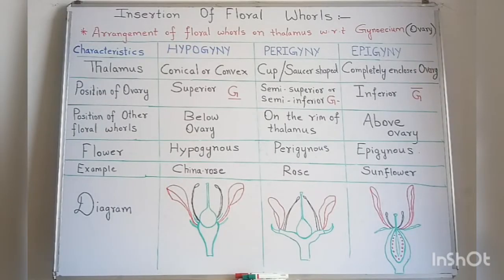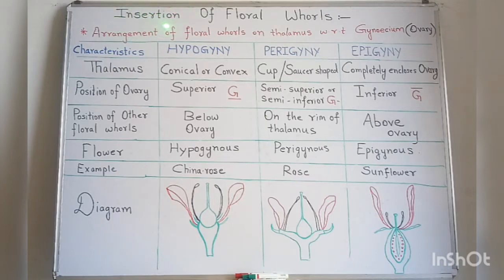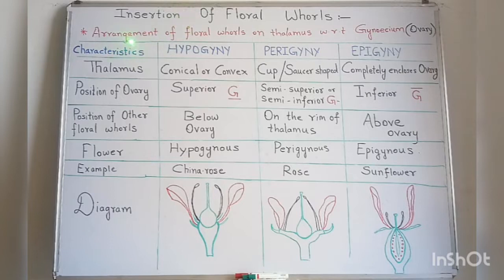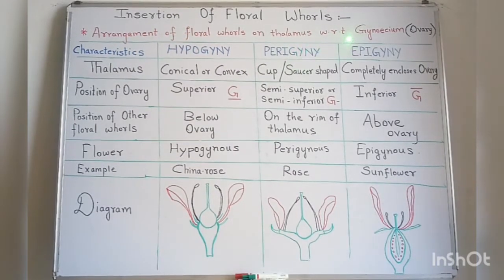In our previous lecture we studied about floral whorls — that is calyx, corolla, androecium and gynoecium. Today we are going to study about the insertion of floral whorls. It is defined as the arrangement of floral whorls on the thalamus with respect to the position of gynoecium, and this is called insertion of floral whorls.